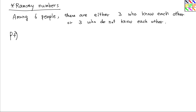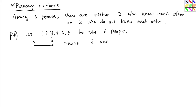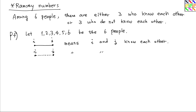We have six people, and let's name them using numbers: one, two, three, four, five, six. We can represent this situation by drawing solid edges or dashed edges. We represent acquaintance using a solid edge — this means i and j know each other. Otherwise, we draw a dashed edge between i and j, meaning i and j do not know each other.